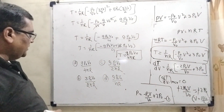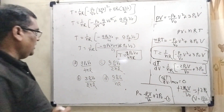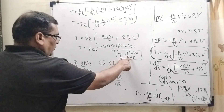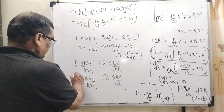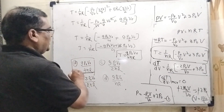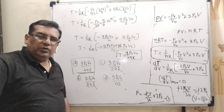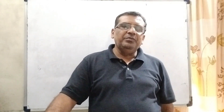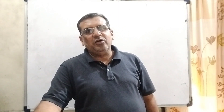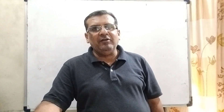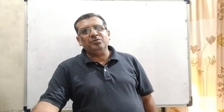So our answer is 9P₀V₀ upon 4NR. Looking at the options, 9P₀V₀ appears in options A and D, but 4NR is found only in option A. So our answer is option A. I hope you understood this question. Thank you for staying till the end of this video. Please like, share and subscribe my channel so it can reach more and more students. Thank you. Take care. Bye bye.